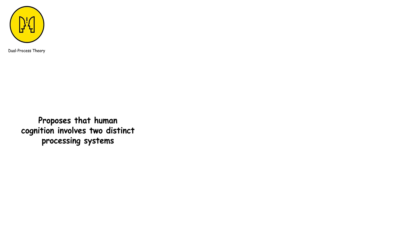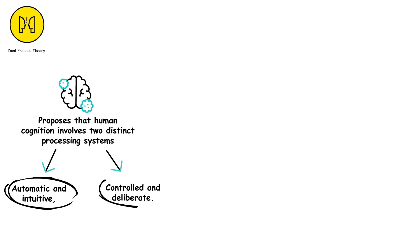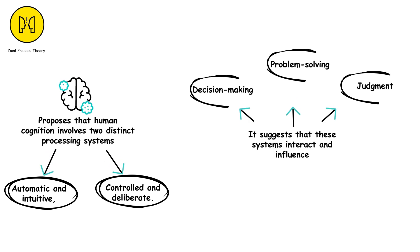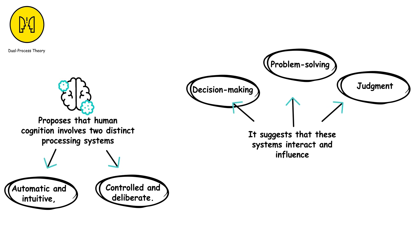Dual process theory proposes that human cognition involves two distinct processing systems: one automatic and intuitive, and the other controlled and deliberate. It suggests that these systems interact and influence decision-making, problem-solving, and judgment.